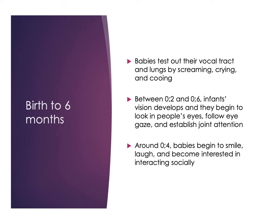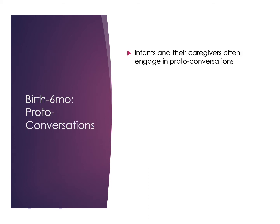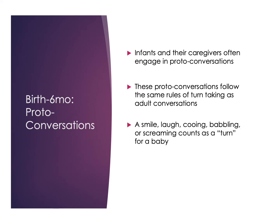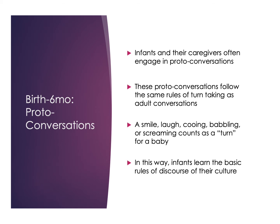During this time period, even at a very young age, we're already starting to engage in what we call proto-conversations. These aren't really conversations at all, but they follow the same rules of turn-taking and how adult conversations take place. From language to language, we have different expectations of overlap, interruption, and what is acceptable. Babies are already learning those things through proto-conversations — they might smile, laugh, babble, or scream as their turn, an adult responds, and they continue back and forth, learning the basic rules of discourse of their culture at a very young age.